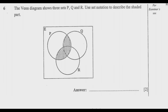Let us look at question six in detail. The Venn diagram shows three sets P, Q, and R. Use set notation to describe the shaded part. What we are required to do is use set notation to describe the region which is shaded. I'll give you two ways to answer this question, but the answer is still the same.